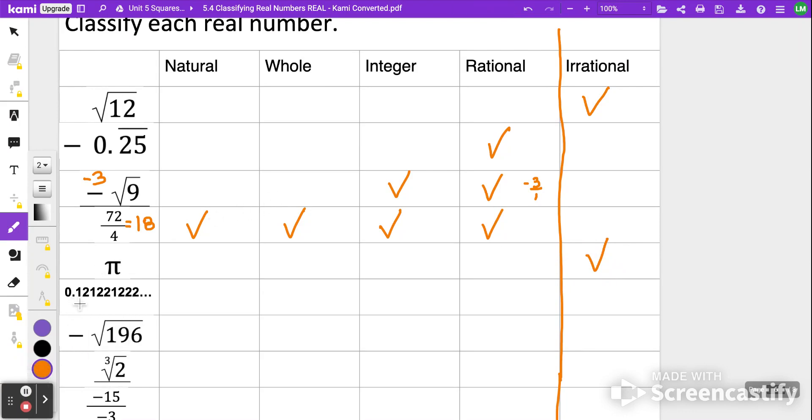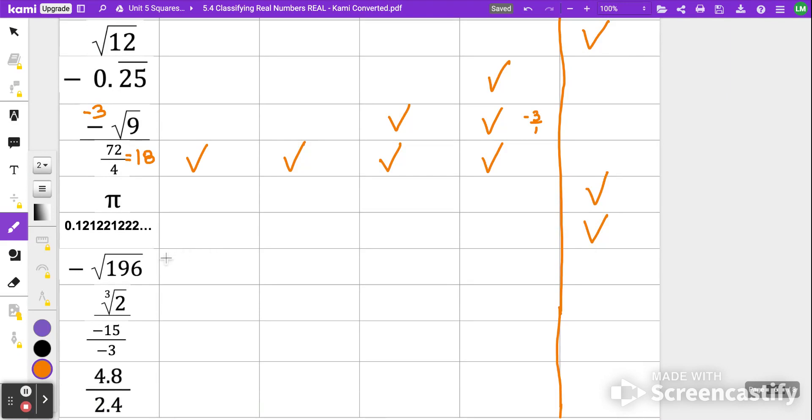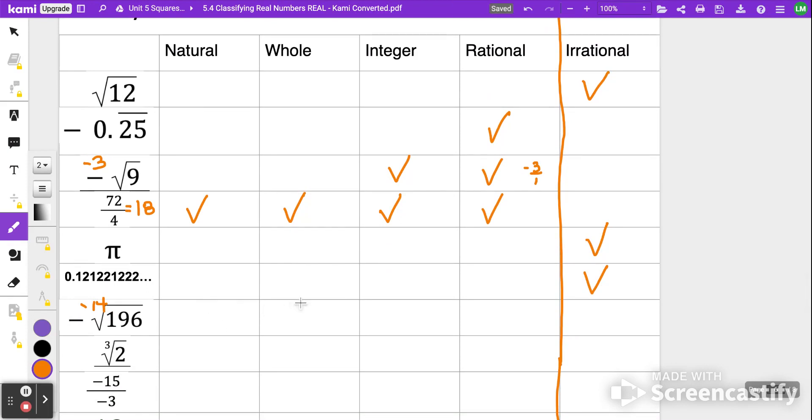Next up, we have this decimal. Notice how the decimal, it does have a pattern, but there's no way that we can put the repeating bar over it. So we would also have to consider this as irrational, because it's not ending and it's not repeating using that repetition bar, the bar notation. The negative square root of 196, if you go back to your square root list that I gave you and you just find the square root of 196, it's going to be 14. So this is actually going to equal negative 14. Negative 14 would be considered not a natural or a whole number, because those have to be positive or start at 0, but it is an integer, and because it's an integer, it's also considered rational, because negative 14 can be written as a fraction, as negative 14 over 1.